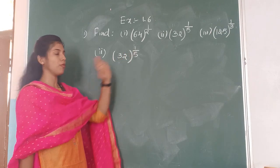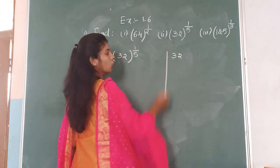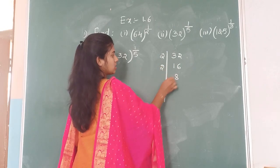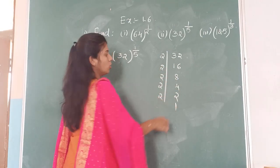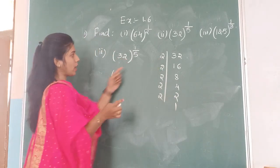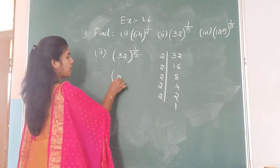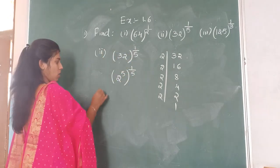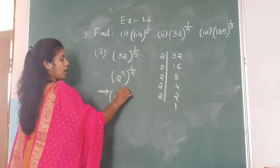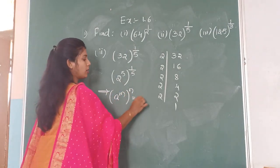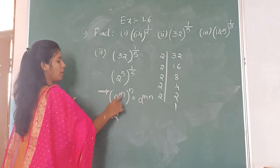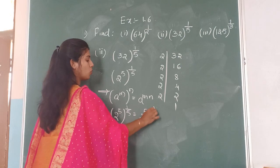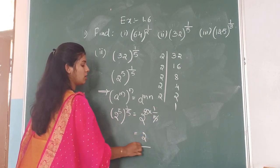The second one is 32 to the power of 1 by 5. Using prime factorization: 32 = 2 × 16 = 2 × 2 × 8 = 2 × 2 × 2 × 4 = 2 × 2 × 2 × 2 × 2, so 32 = 2 to the power of 5. Then 2 to the power of 5, whole to the power of 1 by 5 — multiplying powers: 5 into 1 by 5, the 5s cancel. The answer is 2.